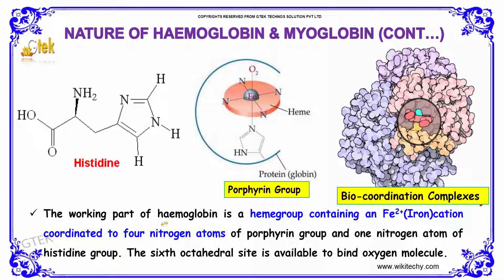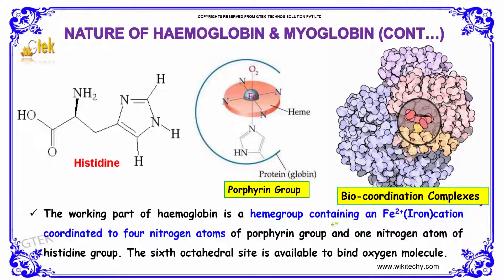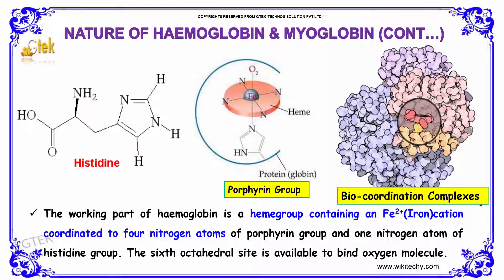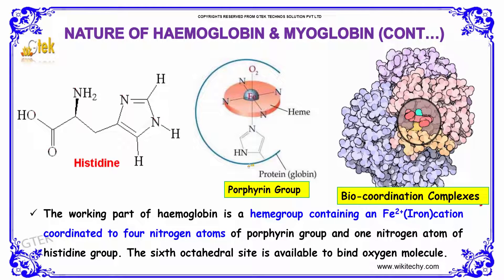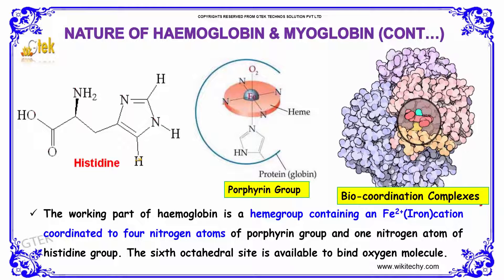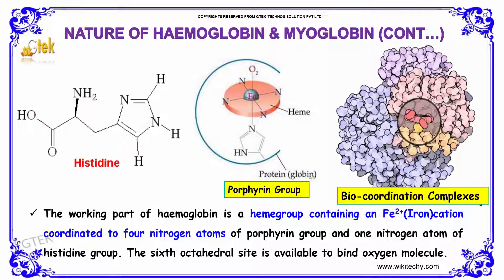The working part of hemoglobin is the heme group, containing an Fe²⁺ cation coordinated with 4 nitrogen atoms of the porphyrin group and 1 nitrogen atom of the histidine group. The sixth octahedral site is available to bind oxygen molecules.